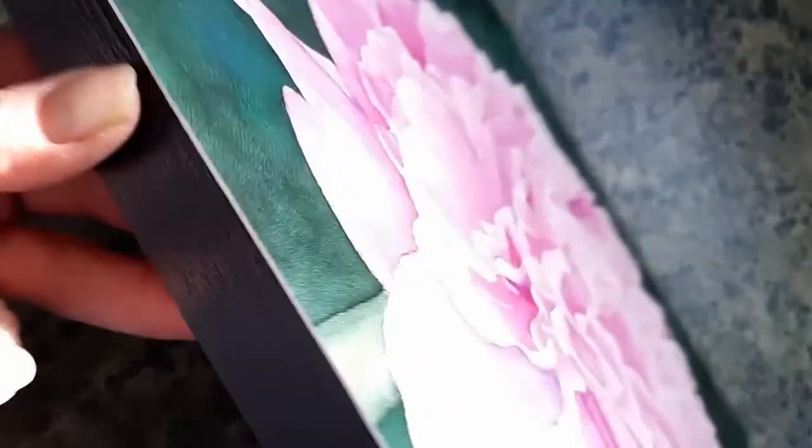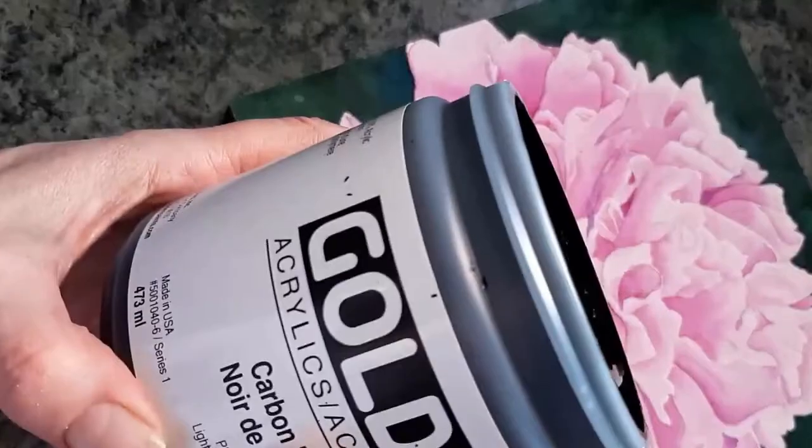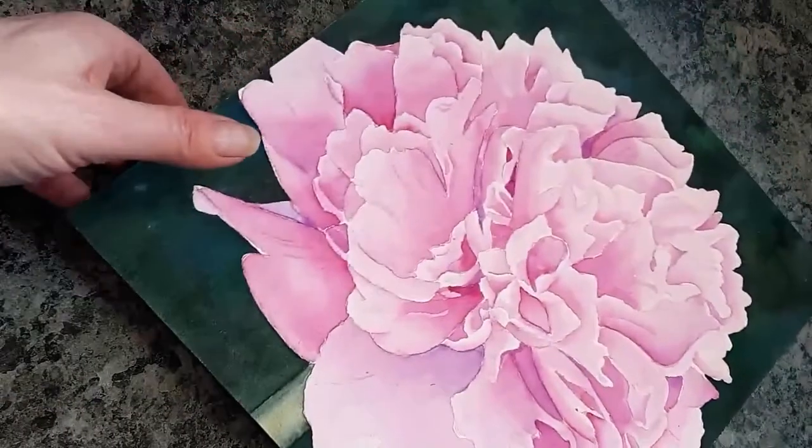For this last video, we're going to talk about what happens to the sides. As you can see, once the edges are cut—and this is a 300 pound watercolor paper—you've got the stark white edge against the black. So what I normally do is I go back to my golden carbon black paint and use a small brush.